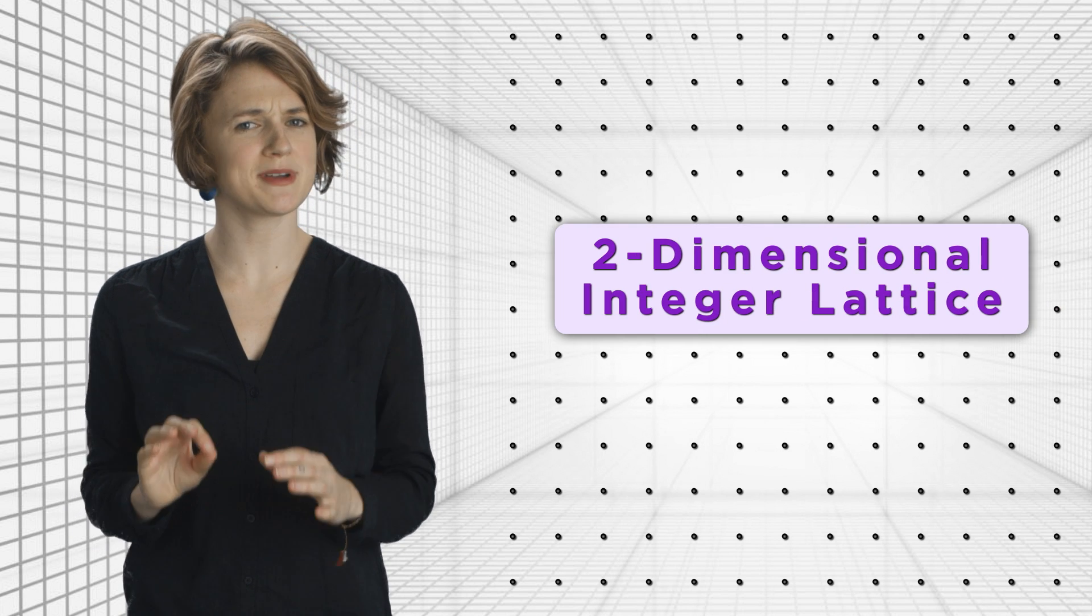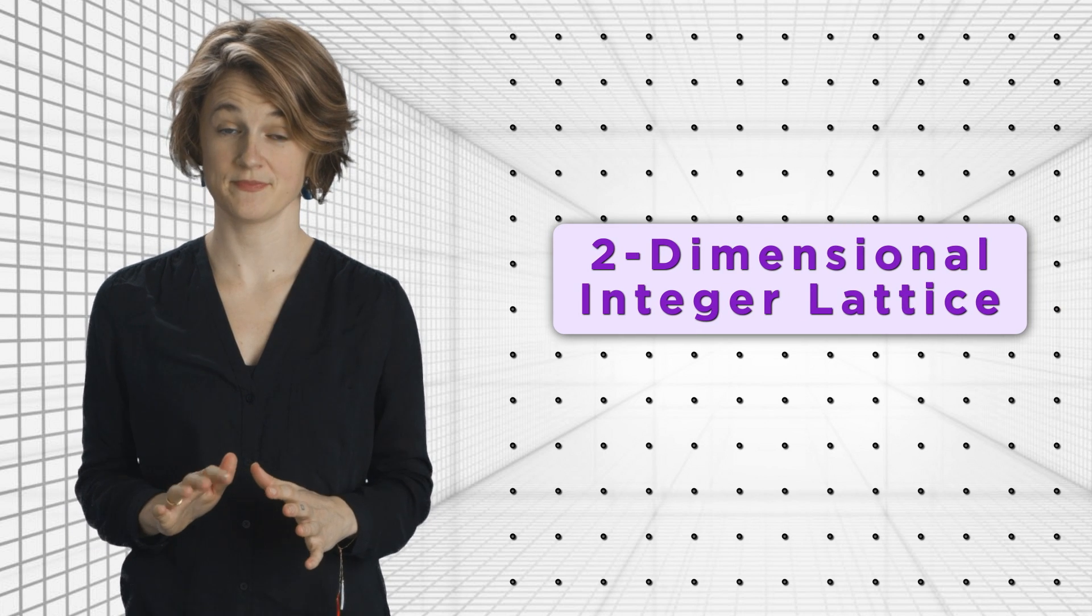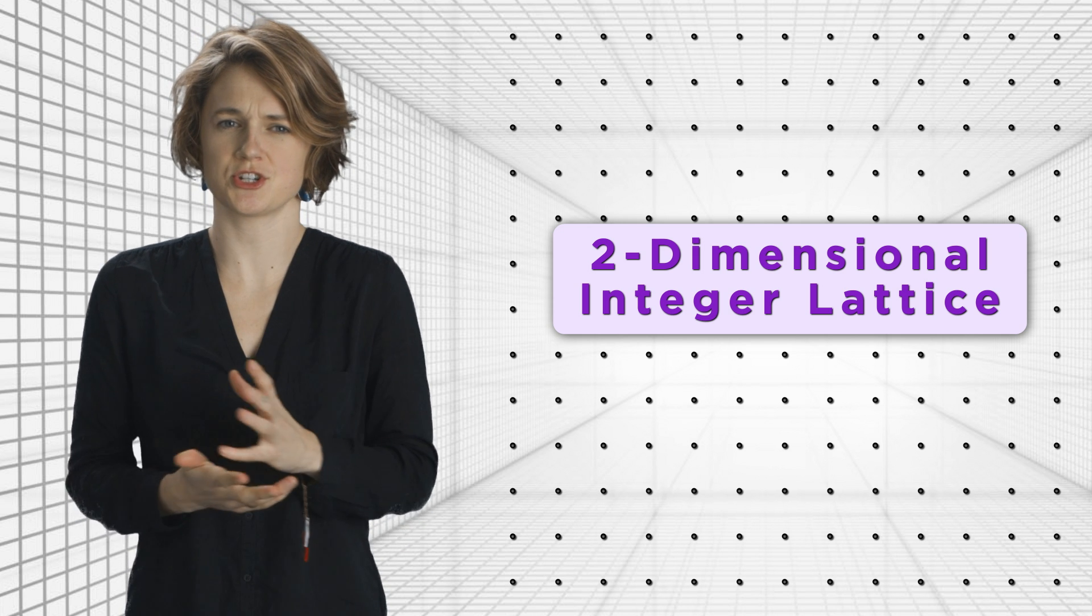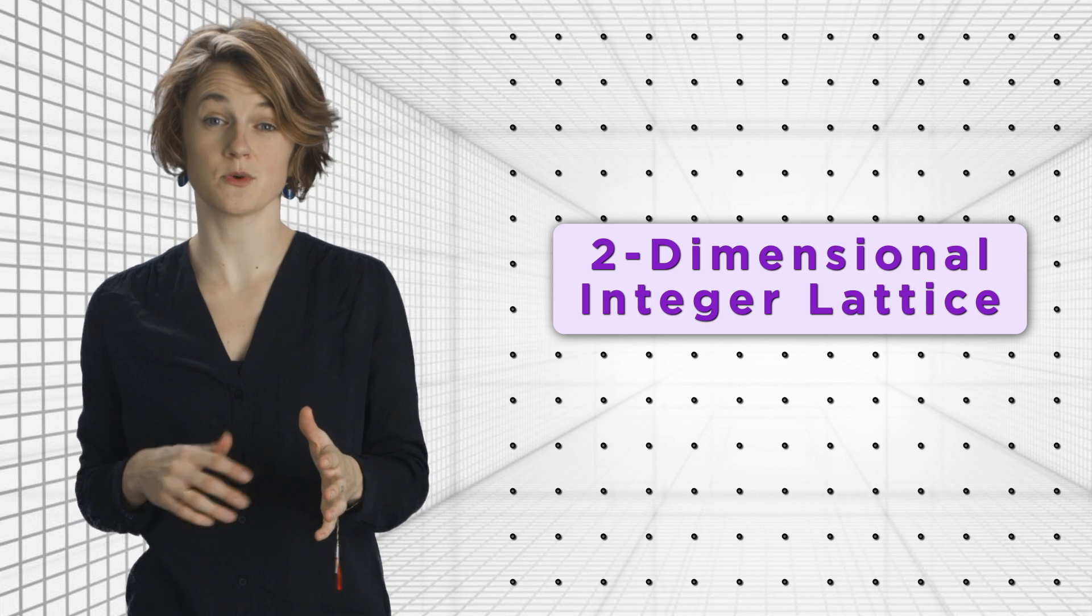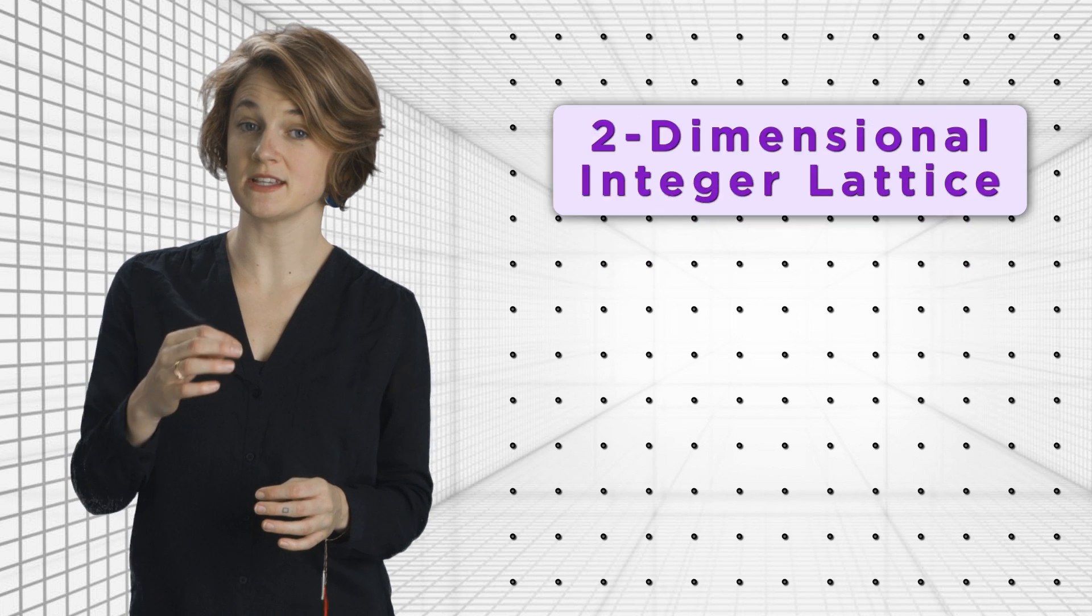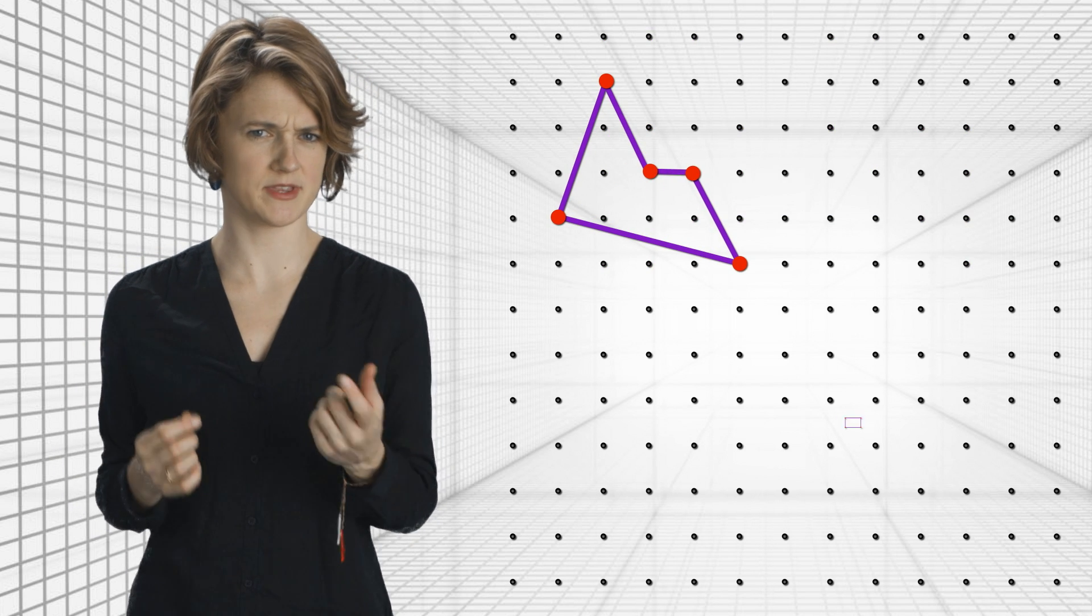Now, how is the Euler characteristic of a planar graph going to help us find the area of some crazy looking polygon? Let's set up the problem more precisely. Let's say we have a grid of dots spaced 1 centimeter apart. It's called the two-dimensional integer lattice. Form a polygon, which is just a shape with straight sides so that its corners, or vertices, are points on the integer lattice, like this or this.